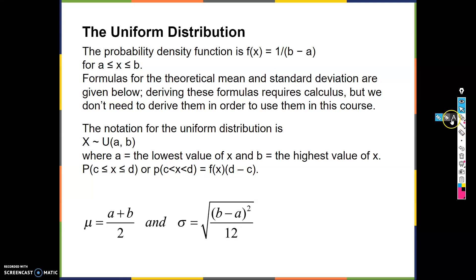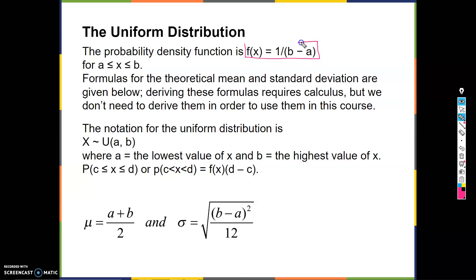Okay, so this slide is super important. The uniform distribution's probability density function is f(x) = 1/(b - a), for x between a and b. That's going to come in handy.